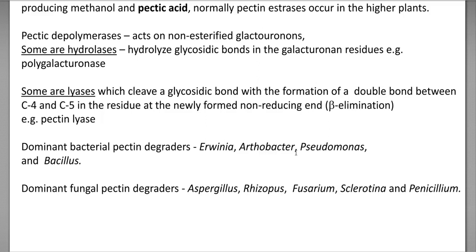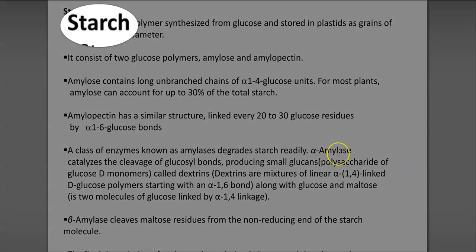Fungal pectin degraders comprise Aspergillus, Rhizopus, Fusarium, Sclerotinia, and Penicillium.